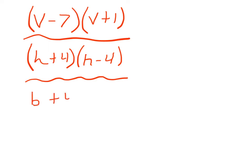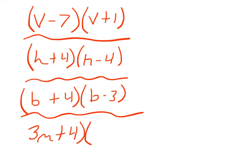Third question is going to be B plus 4 times B minus 3. And the last question will be the trickiest: 3M plus 4 times 2M minus 5. Try and make a box for each of those. Hope this helps out. Have a great day.